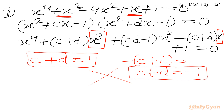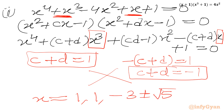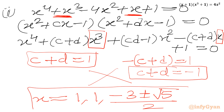So our final solution is x = 1 with multiplicity 2, and x = (-3 ± √5) / 2. I hope friends you will like this video. Thank you very much for watching. Do not forget to like, share, and subscribe. Bye-bye till the next video. Take care of yourself. Goodbye.